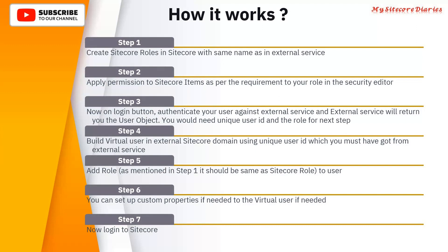Step two: apply permissions to the Sitecore item as per the requirement in your role in the security editor. For that created Role A, you assign permissions. In our example, you have a private window and a public window, so you assign it access to both. You can use the security editor to assign those permissions.